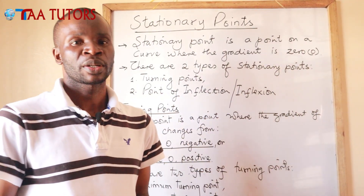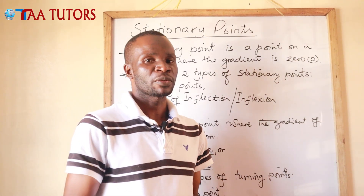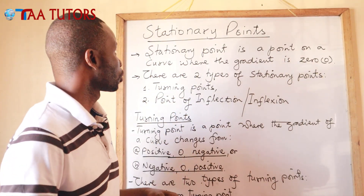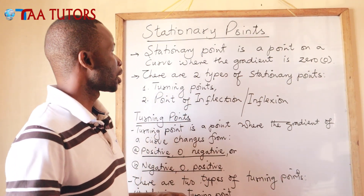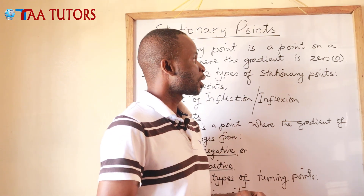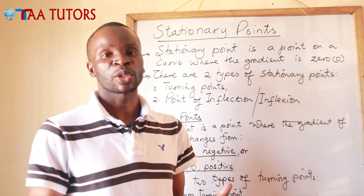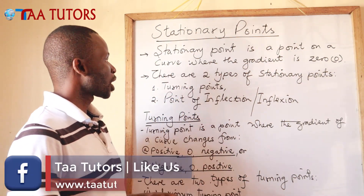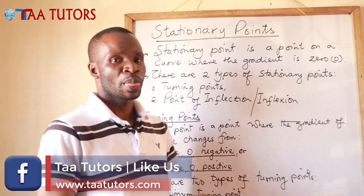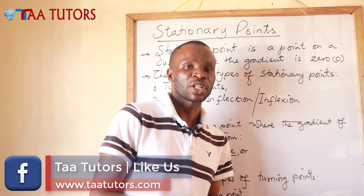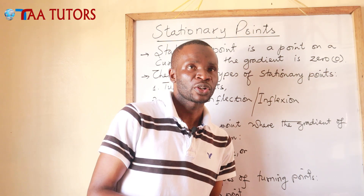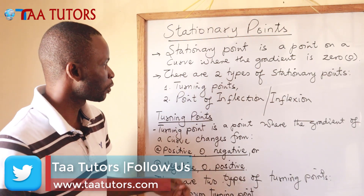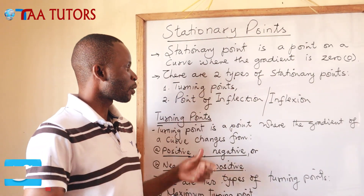Welcome back viewers. This is the second part of the lesson. In the first part we looked at equations of tangents and normals. Now we move to stationary points, which carries many marks in examinations. A stationary point is a point on a curve where the gradient is 0 — the rate of change is zero. There are two types: turning points and points of inflection.